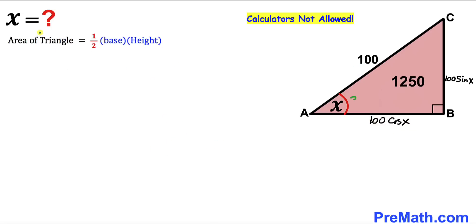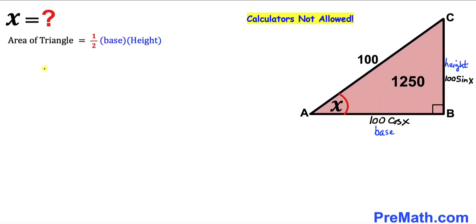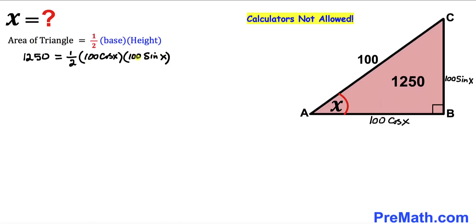Now let's recall the area of a triangle formula: area equals one half times base times height. In our case, the base is 100 times cosine of x and the height is 100 times sine of x, and the area is 1250. Filling in the formula: 1250 equals one half times 100 cosine of x times 100 sine of x.